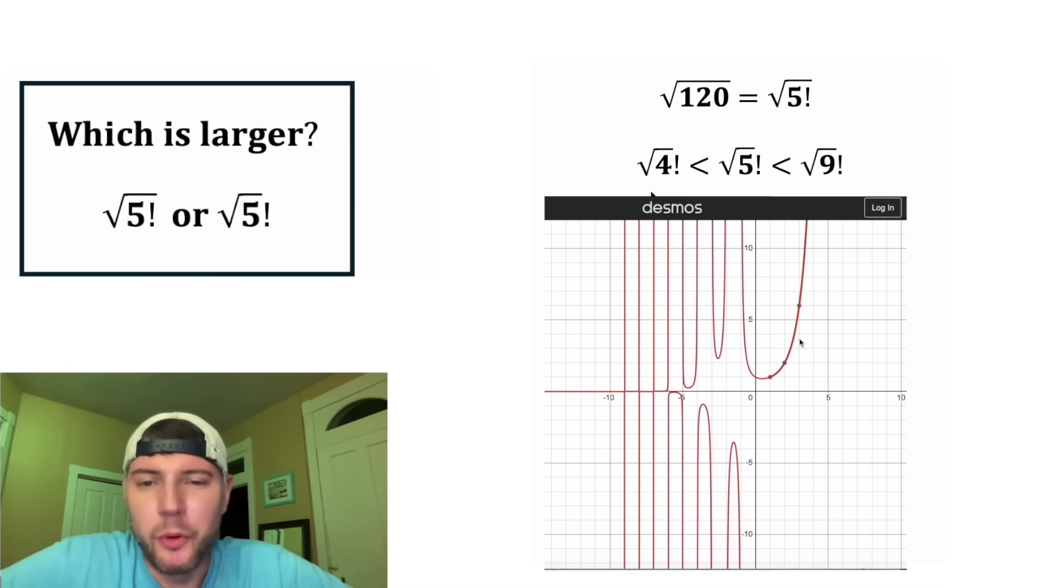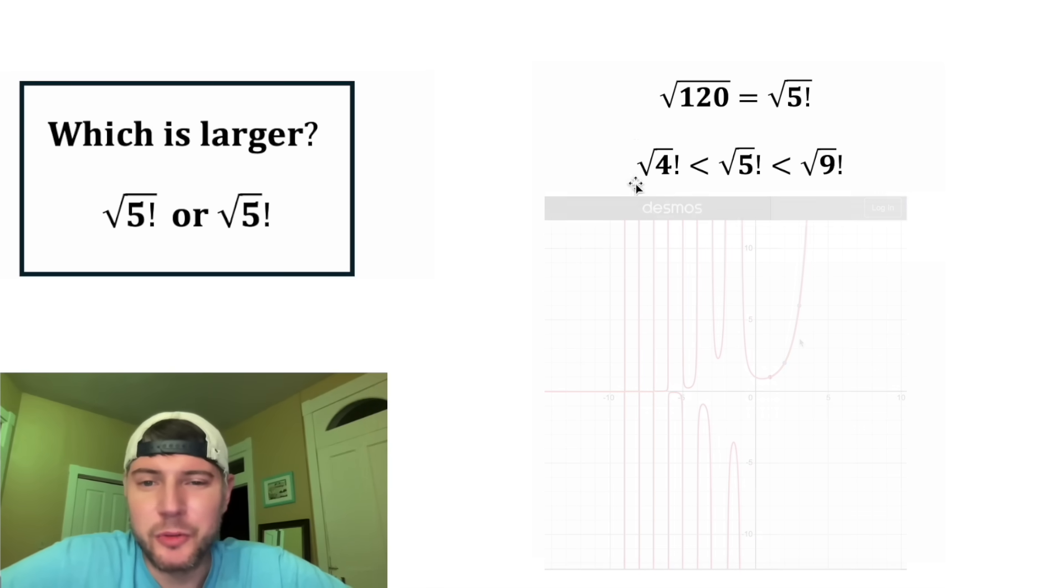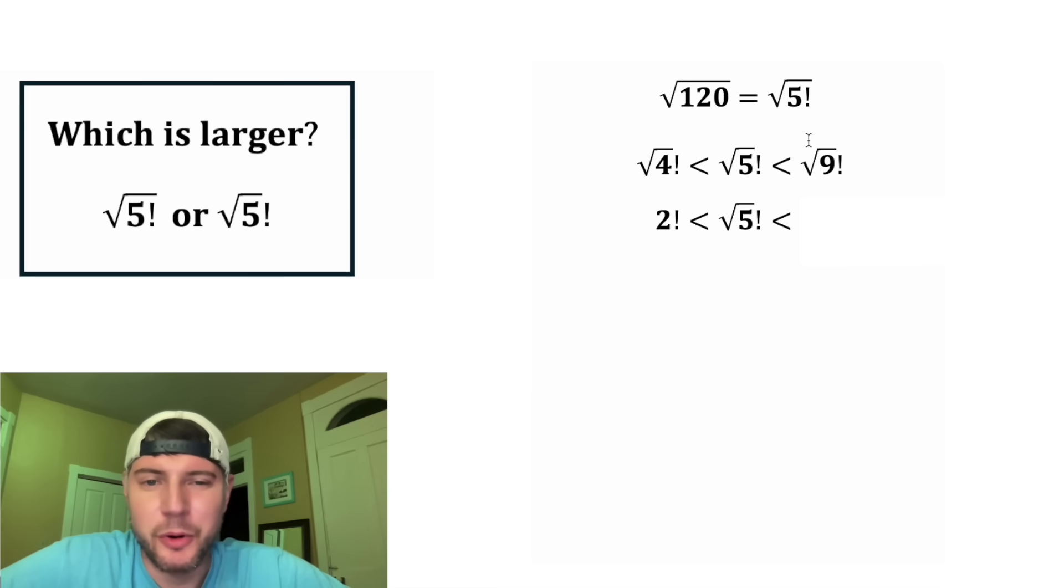We can say the square root of 4 factorial is less than the square root of 5 factorial is less than the square root of 9 factorial. And the square root of 4 is equal to 2. We can bring this part down. And square root of 9 is equal to 3. And then 2 factorial is equal to 2. Let's bring this down again. And 3 factorial is equal to 6. We don't know for sure what this is equal to, but we know that it's in between 2 and 6.